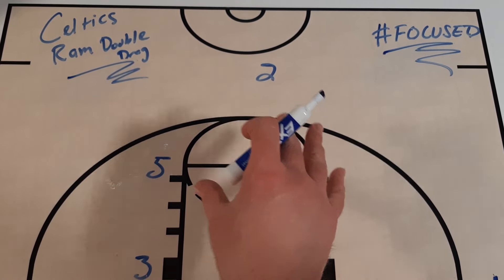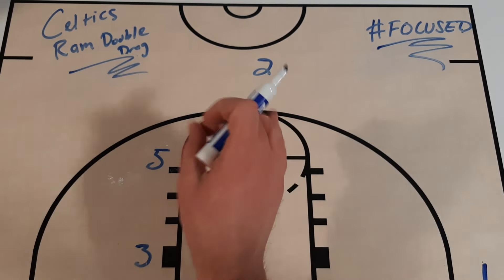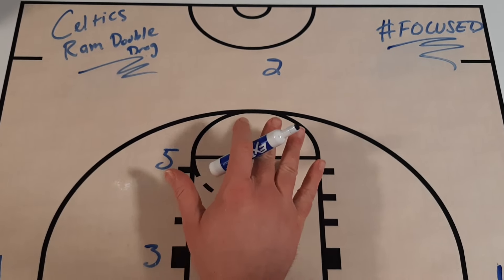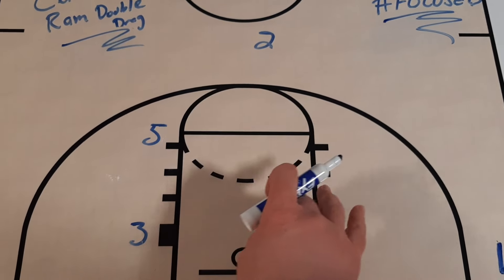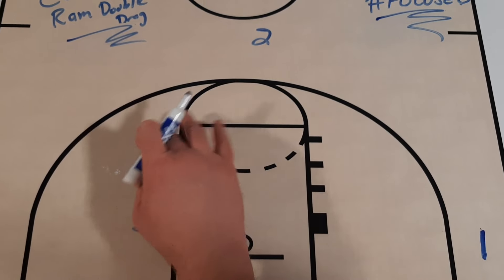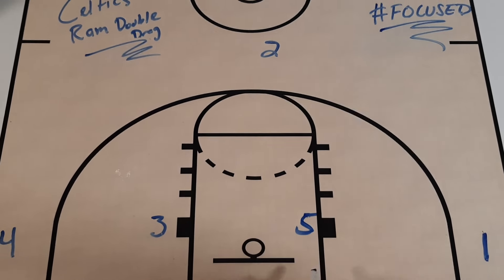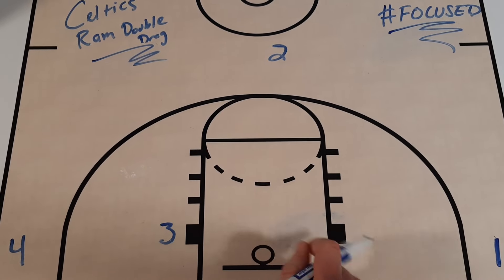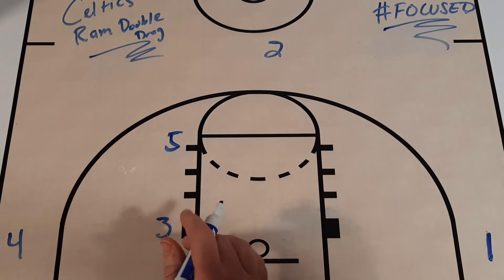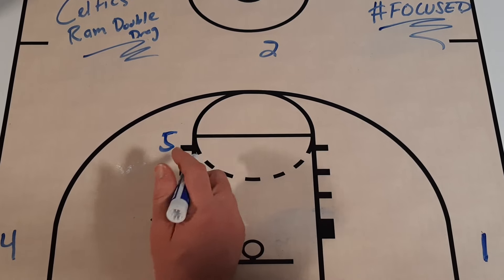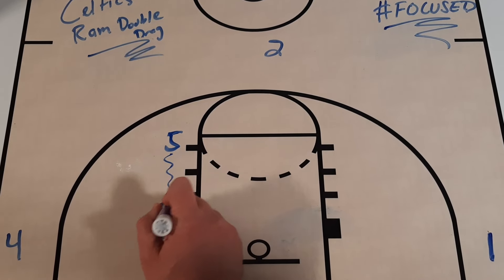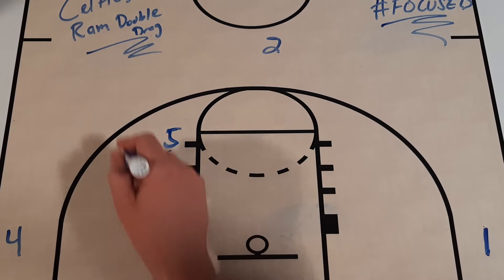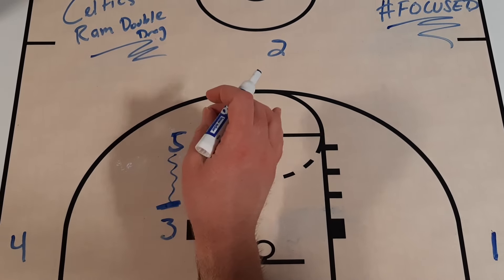I'm going to show you three different options off of this action that the Celtics use. It's a really simple set — it could start out of a four-low look, so you could have a player down here and have them come across. The Celtics tend to put this player up here and stack these two — whatever works best for your team.